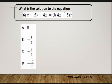All right, so here we have the equation 6(x - 5) - 4x = 3(4x - 5), and then there you have your answer choices.